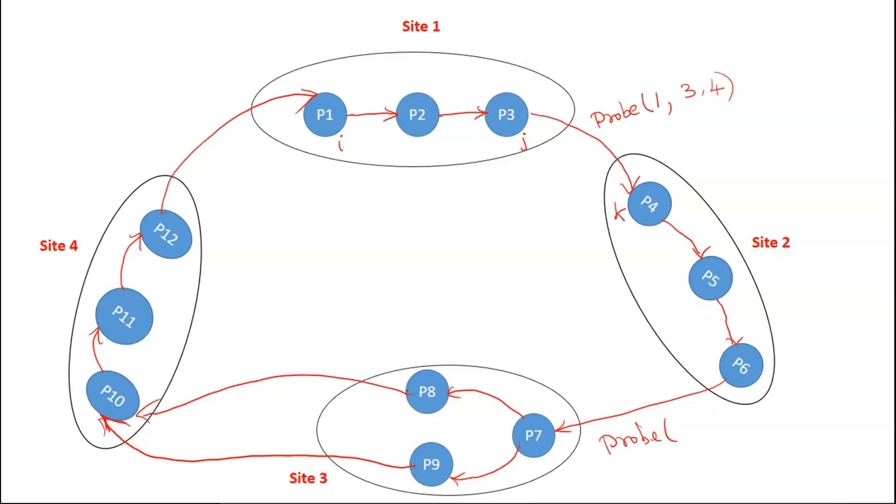Here site 2, p4 is not going to be the initiating process. P4 is sending here. P6, p6 is the jth process in your k, and the p7. So 6 comma 7. And now here what is the probe? There are two probes from site 3 to site 4. So the first here is as usual one is the initiating process. Here p8 is j, p10 is k. Likewise, similarly, probe here is 1 comma 9 comma 10. And here what is the probe? 1 comma 12 comma 1.